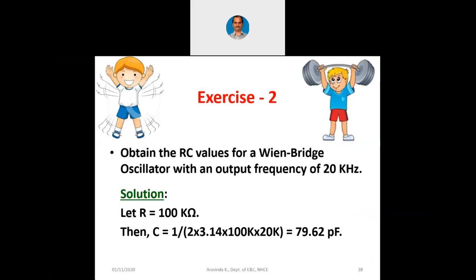I have already discussed how to compute C = 1/(2π·R·f), so we got C as 79.62 picofarads. Now coming to the value of R3 and R4: if we choose R4 to be 100 kilohms, then R3 must be double that of R4, so R3 must be naturally 200 kilohms. This is how we can construct a Wien bridge oscillator and use it for our applications.